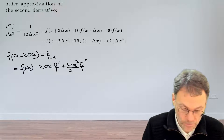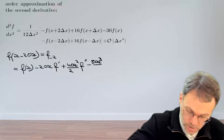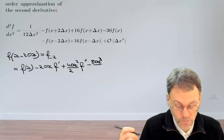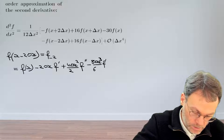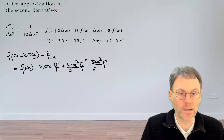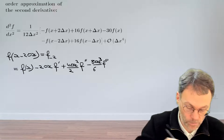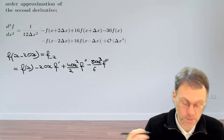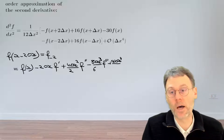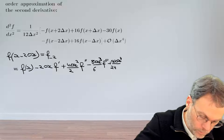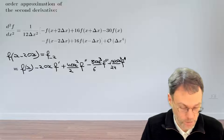For the third order derivative, the deviation to the power of 3 becomes minus 8Δx cubed divided by 3 factorial, that's 6, times the third derivative. And then the fourth derivative term: the deviation to the power of 4 becomes 16Δx to the power of 4, divided by 4 factorial, that's 24, times the fourth order derivative. And then some other terms which we're going to neglect.